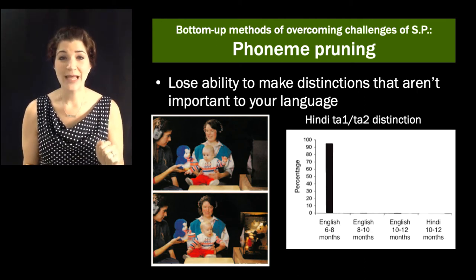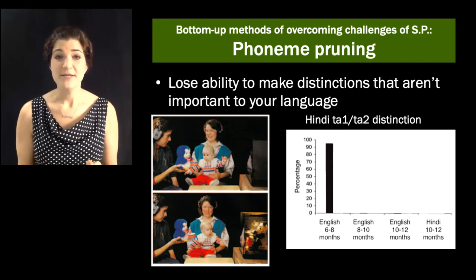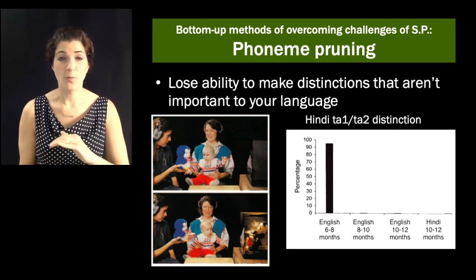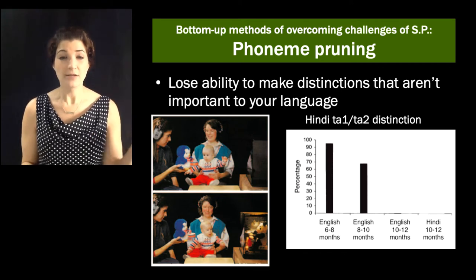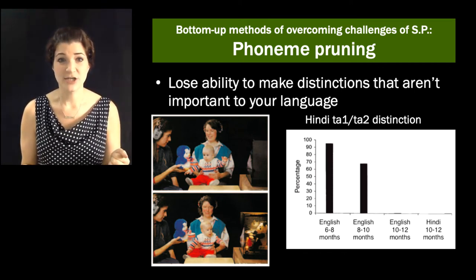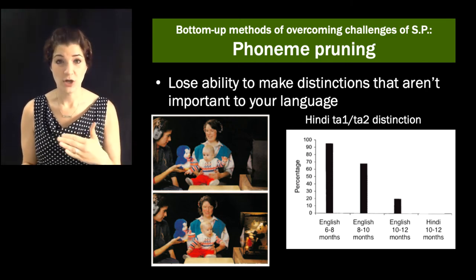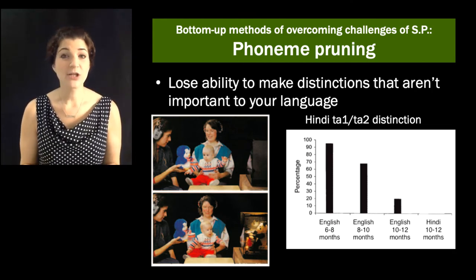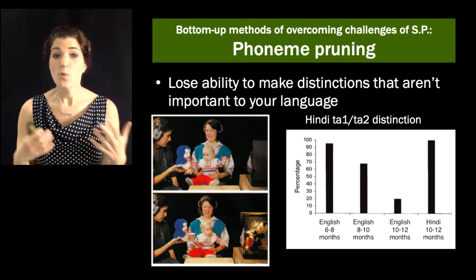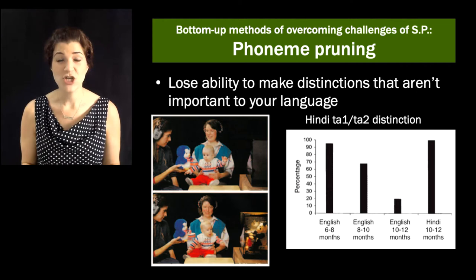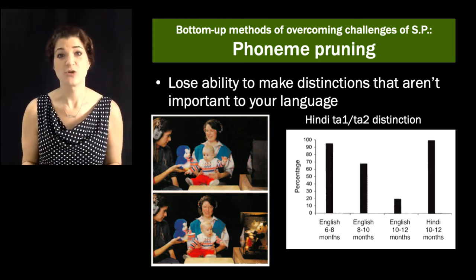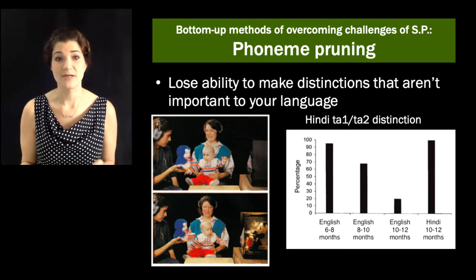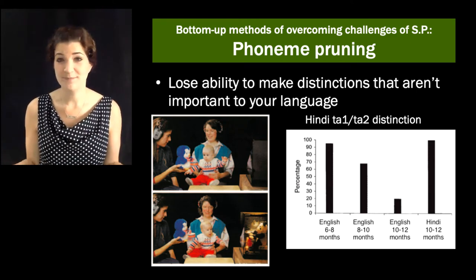So here are the data showing a developmental progression of this. At about six months, babies raised in English speaking households detect the difference between the Hindi T1 and the Hindi T2 most of the time. When they get a little bit older, they're somewhat less likely to notice that distinction. And by the time they're about a year, they rarely turn to look when it changes from T1 to T2, indicating they are no longer noticing that distinction. But if we look at babies raised in Hindi speaking households at that same age, so one of the ways that we deal with the messiness and complexity of speech is to specialize for the language that we are exposed to most. This is akin to what you read about with categorical perception. It's easier to perceive if we have fewer things we need to discriminate between.